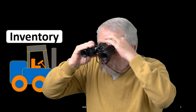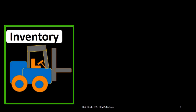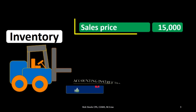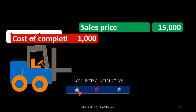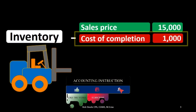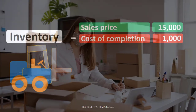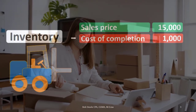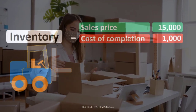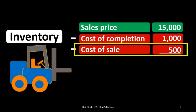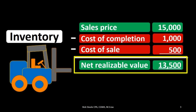Let's take a look at an example — the selling of inventory, in this case a forklift. We will calculate the net realizable value starting with the sales price. We're going to reduce the sales price by the cost of completion — these are costs needed to put that forklift on the market. If there's anything we need to do to the forklift before we can sell it, we include those costs and subtract them from the sales price. We're also going to remove the sales costs needed to make that sale, which then gives us the net realizable value.